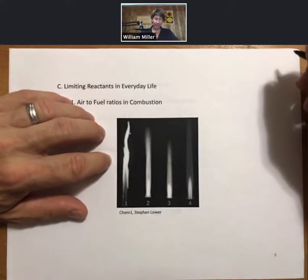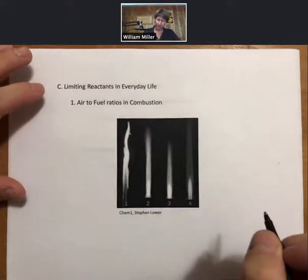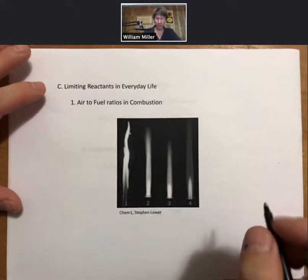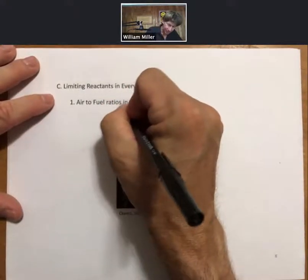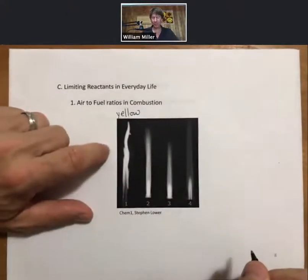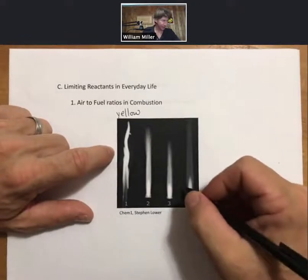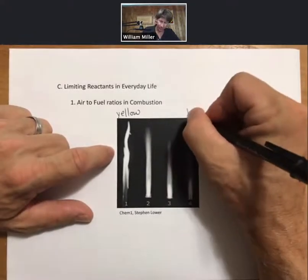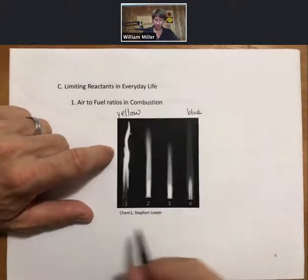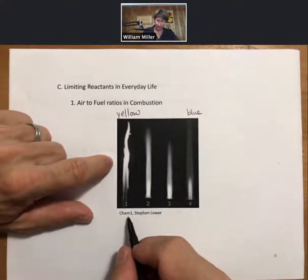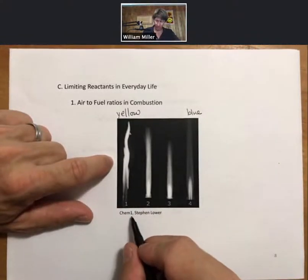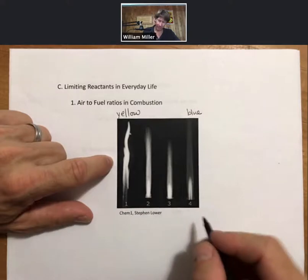This slide has four different flames from a Bunsen type burner. The one on the left is yellow, varying colors. The one on the right on the inner is blue. As you go from one, two, three, to four here.